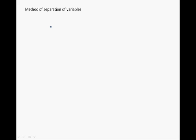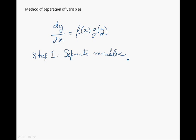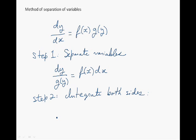We're now going to see the method of separation of variables, which is used for solving differential equations of the type dy over dx equals f of x times g of y. The first step is to separate the variables, giving us dy over g of y equals f of x times dx. The second step is simply to integrate both sides, and when we do so we obtain our unknown function y as a function of x.